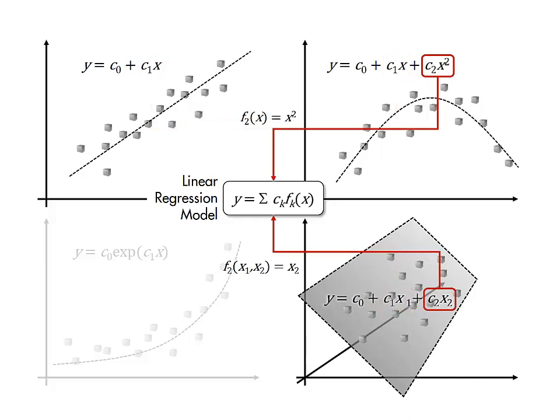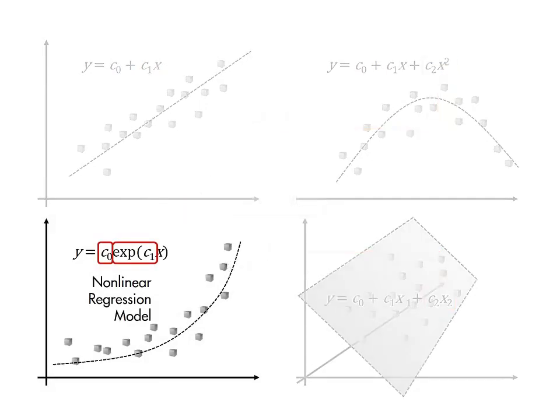Note that the functional dependence on the predictor variables can be linear or nonlinear. The key feature of a linear regression model is that the parameters of the model appear linearly. If the parameters appear in a nonlinear manner, then the regression model is nonlinear.